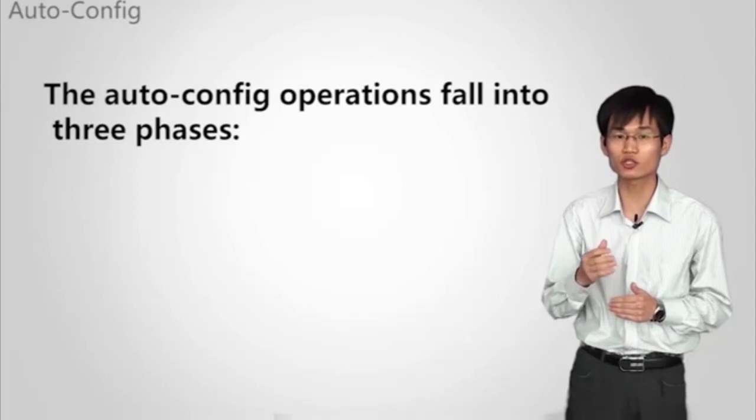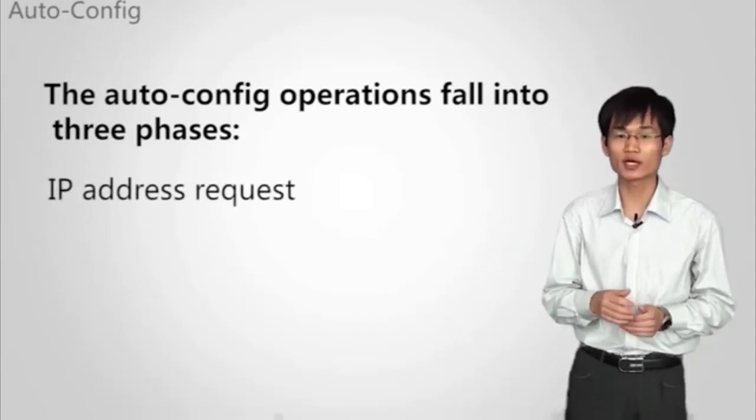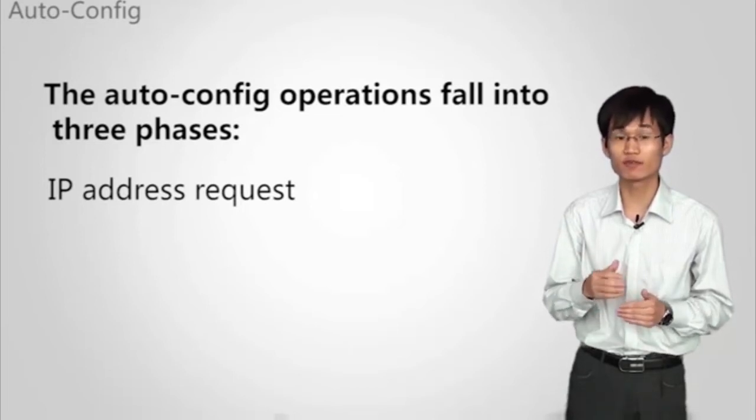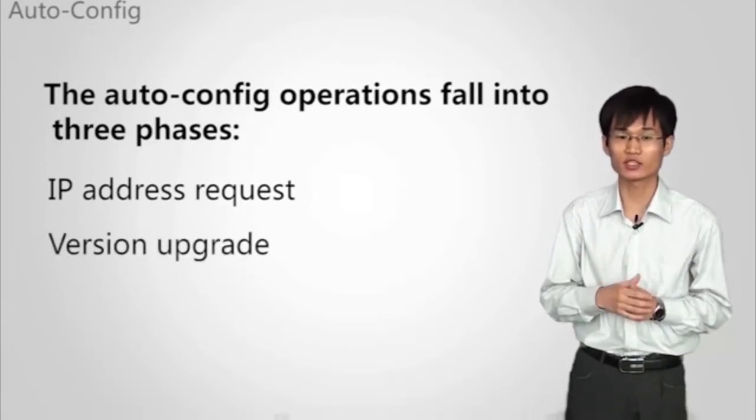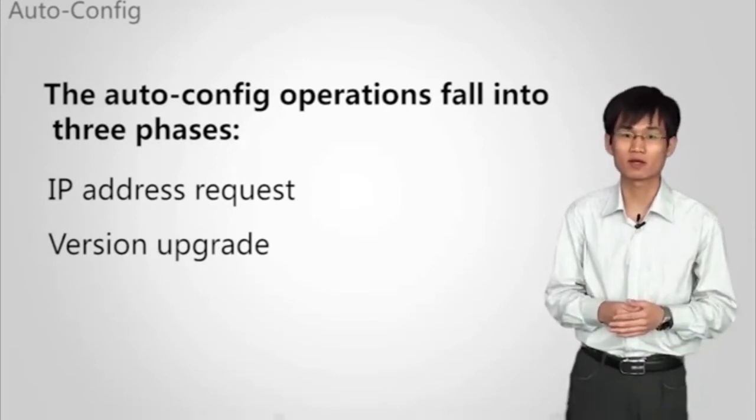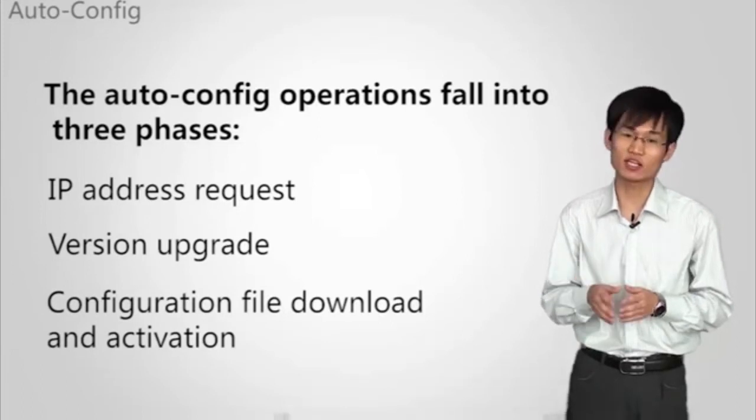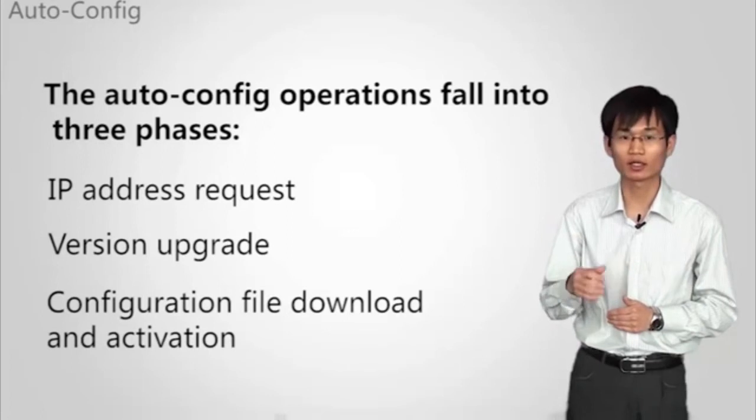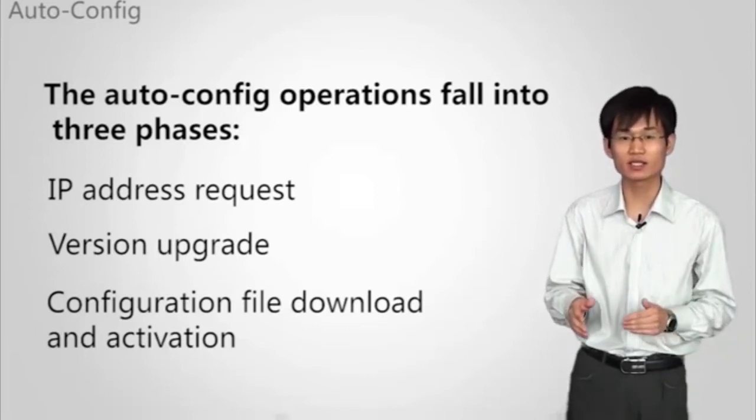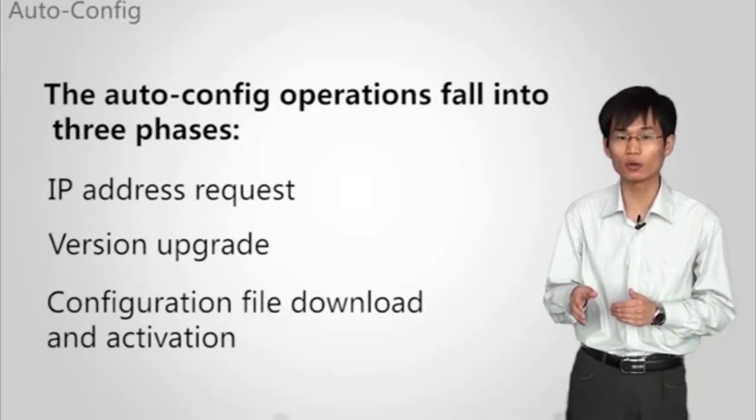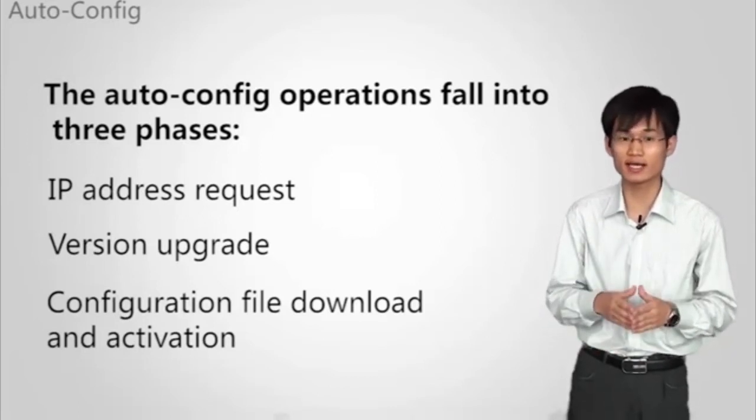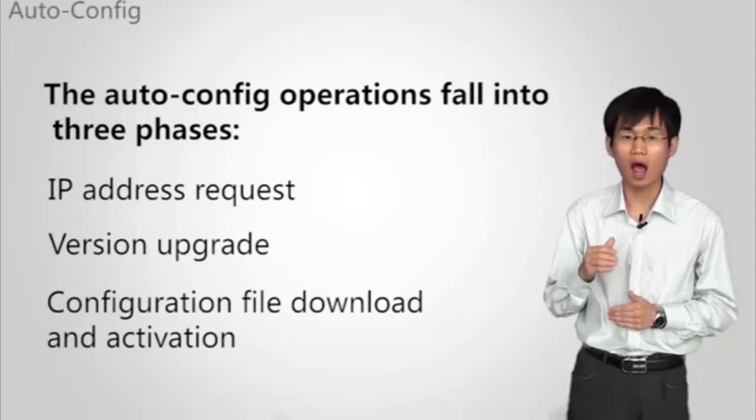The auto-config operations fall into three phases. First, IP address request: the device obtains an IP address from the DHCP server and obtains the user configuration. Second, version upgrade. This phase is optional. Users can choose to upgrade the switch software during deployment. Third, configuration file download and activation. The switch automatically obtains the configuration file from the specified TFTP or FTP server. If the user has specified the activation delay, the configuration file will take effect after the specified delay. If the user has not specified the activation delay, the configuration file will take effect after the default delay.